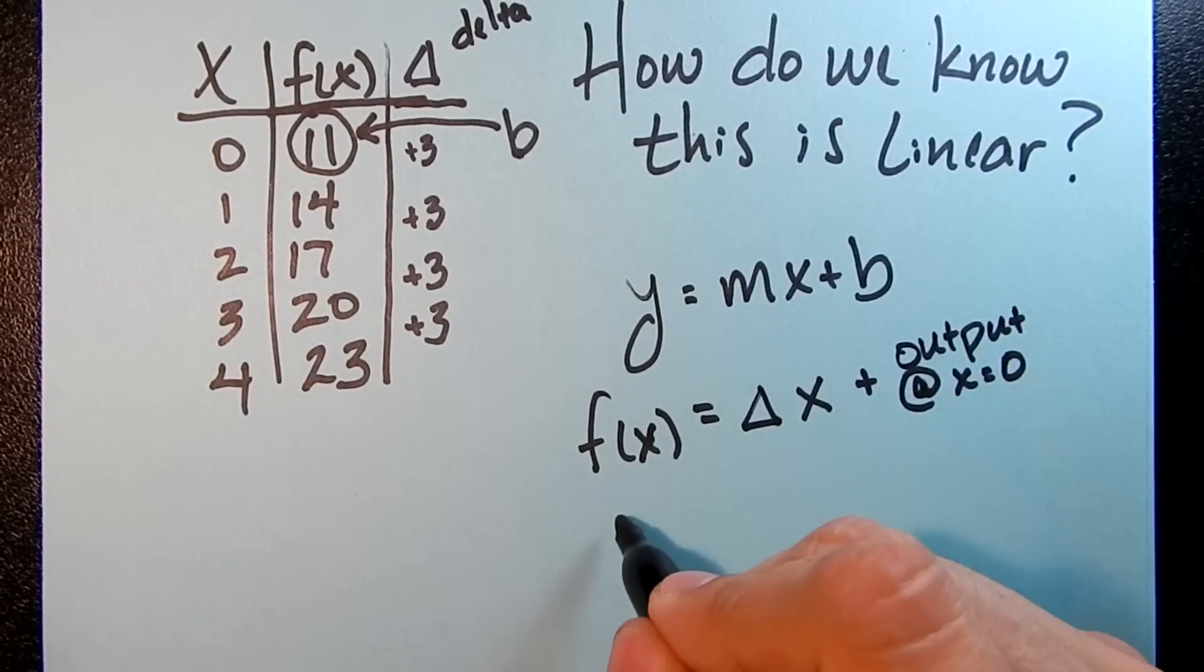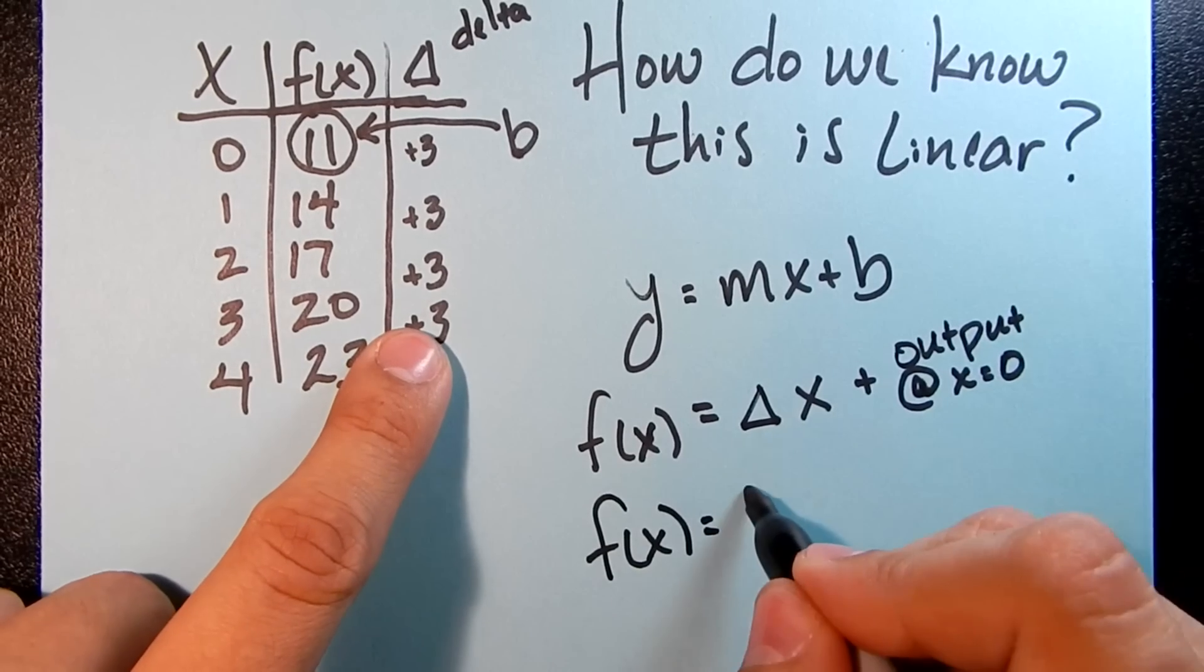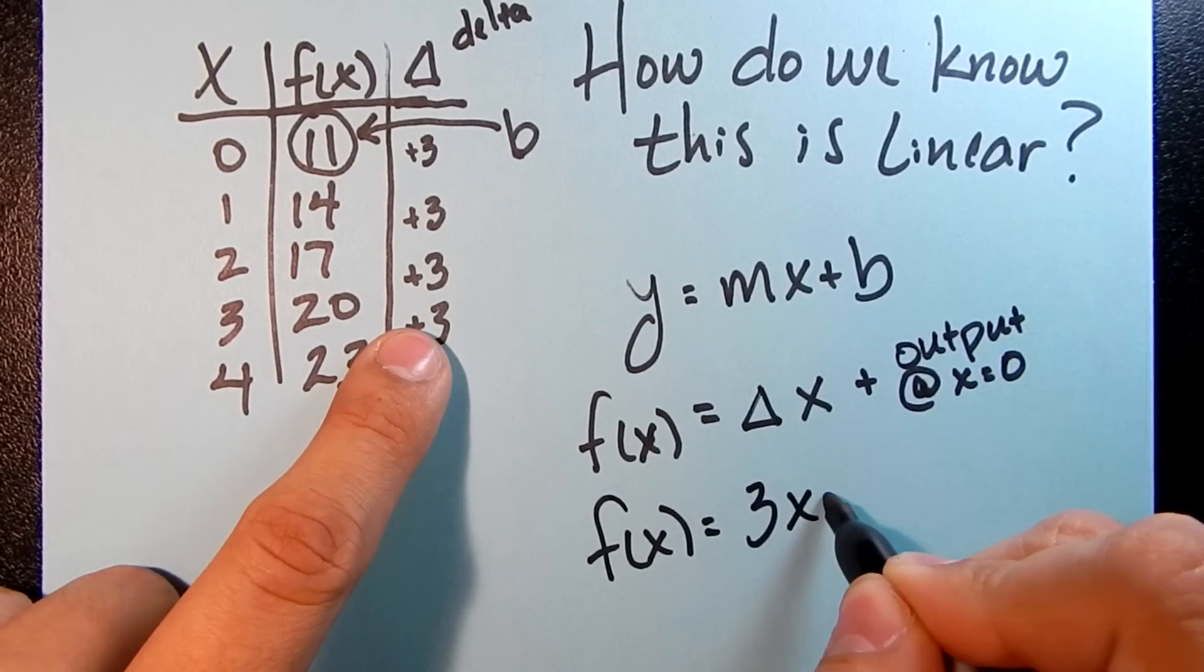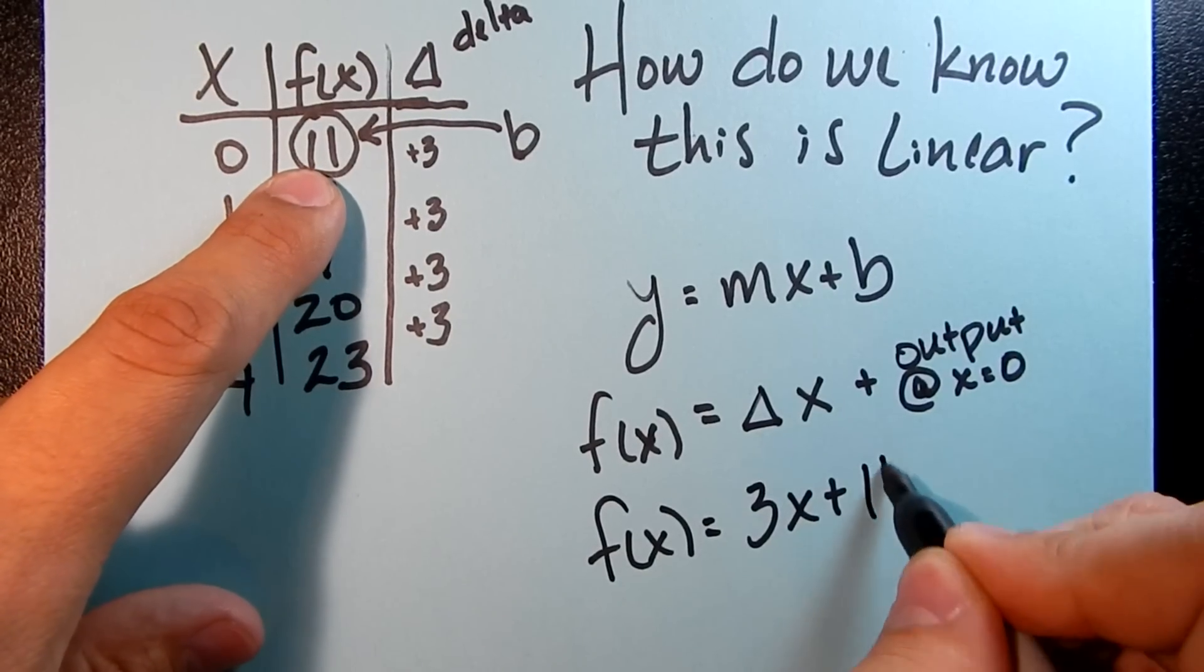So in this case, our function f(x) is delta, which is 3, times x plus our output. When this is 0, that's going to be 11.